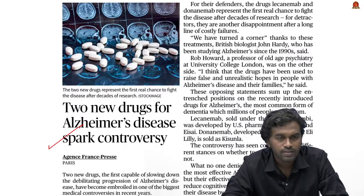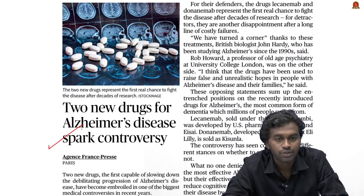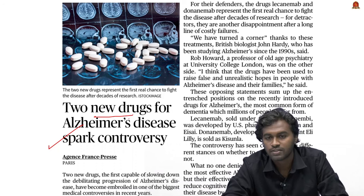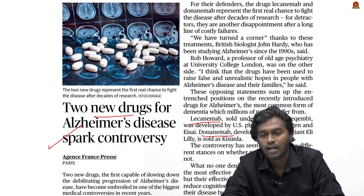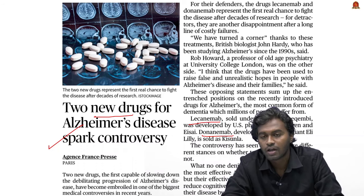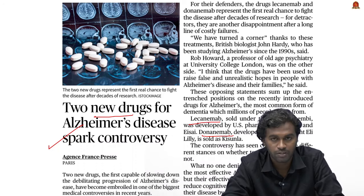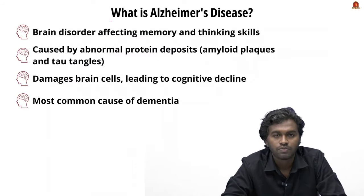Moving to the next article: 'Two Drugs for Alzheimer's Disease Sparked Controversy.' After decades of research, scientists developed two new drugs — Lecanemab and Donanemab — to treat Alzheimer's. They claimed these drugs reduce cognitive decline by 30% in early-stage Alzheimer's patients. However, this claim has become a matter of controversy within the medical community.